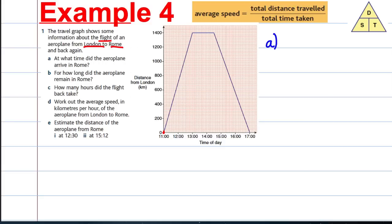Question A asks us at what time did the airplane arrive at Rome? Well, the airplane arrived at Rome at 1300, which is 1:00 PM. Part B: how long did the airplane remain in Rome? Well, while the plane wasn't moving, it must have been in Rome. It looks like that's one and a half hours - it's 1430 take away 1300, which equals 1.5 hours.